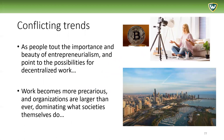What we really have are conflicting trends. People tell us about the importance of entrepreneurialism and point to possibilities for decentralized work that do exist — it's much easier nowadays to buy a camera, buy a computer, set up a YouTube channel, and actually become successful. But work has become more precarious and organizations are larger than ever, dominating what society itself does. At the same time, we don't see income for the majority of people increasing in real terms even accounting for inflation. Technologies are more available and cheaper, but we do have these conflicting trends, and this paints the context in which we work today.